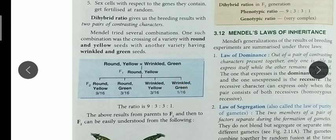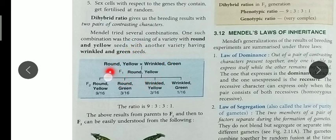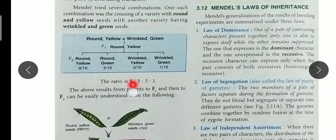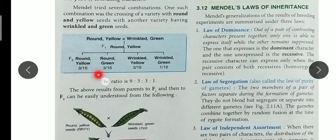But in the F2 generation we will get all plants in the ratio of 9:3:3:1. So the dihybrid ratio in F2 generation is 9:3:3:1 — remember this, it is very important. Out of 16: 9 will be round and yellow, 3 will be round and green, 3 will be wrinkled and yellow, and 1 will be wrinkled and green. This is a brief summary of the dihybrid cross.